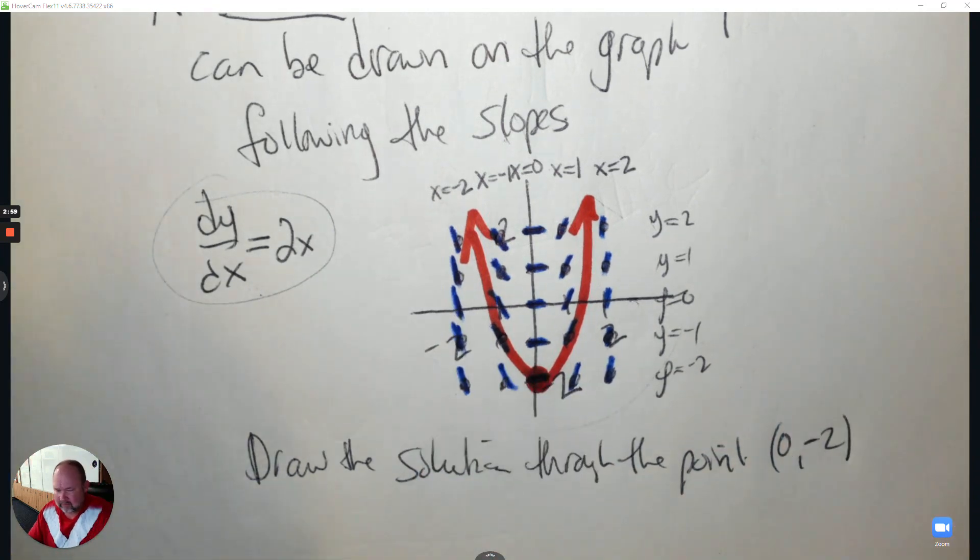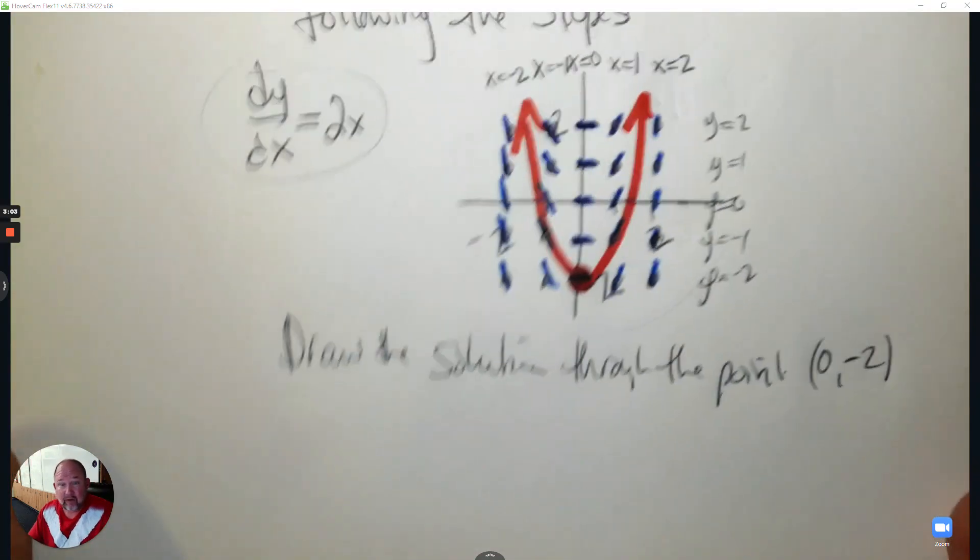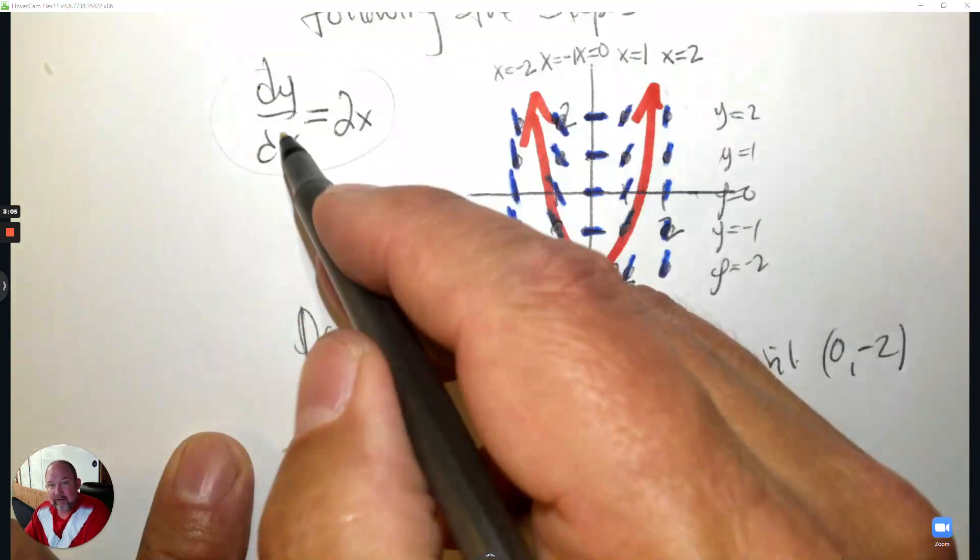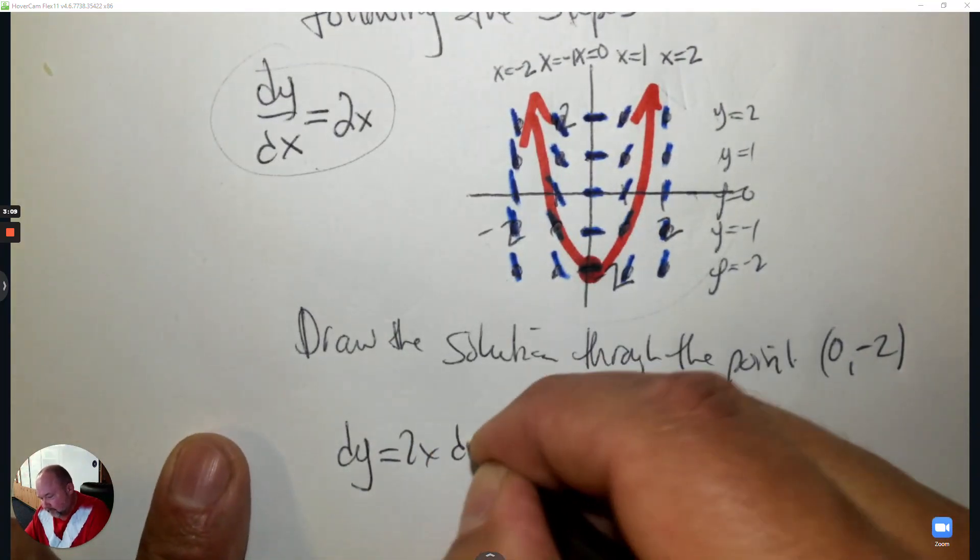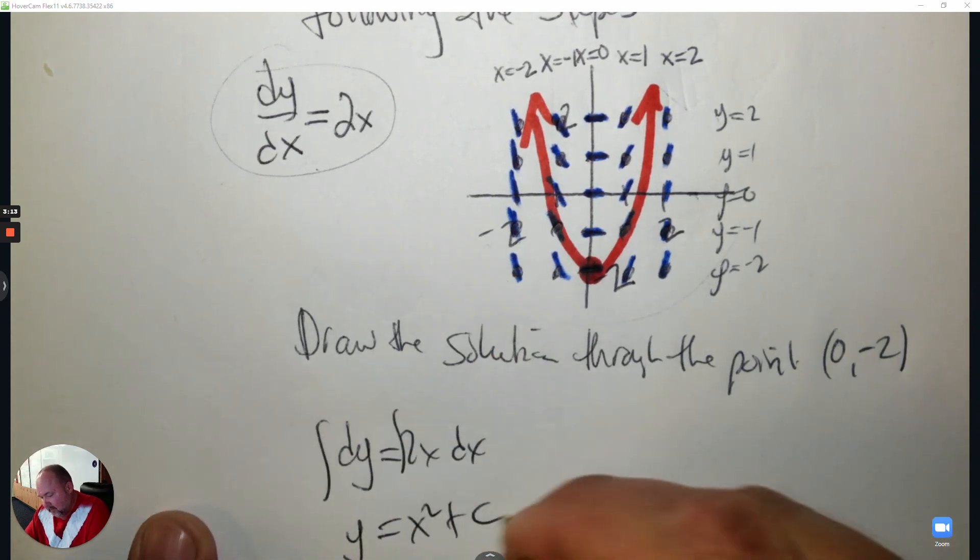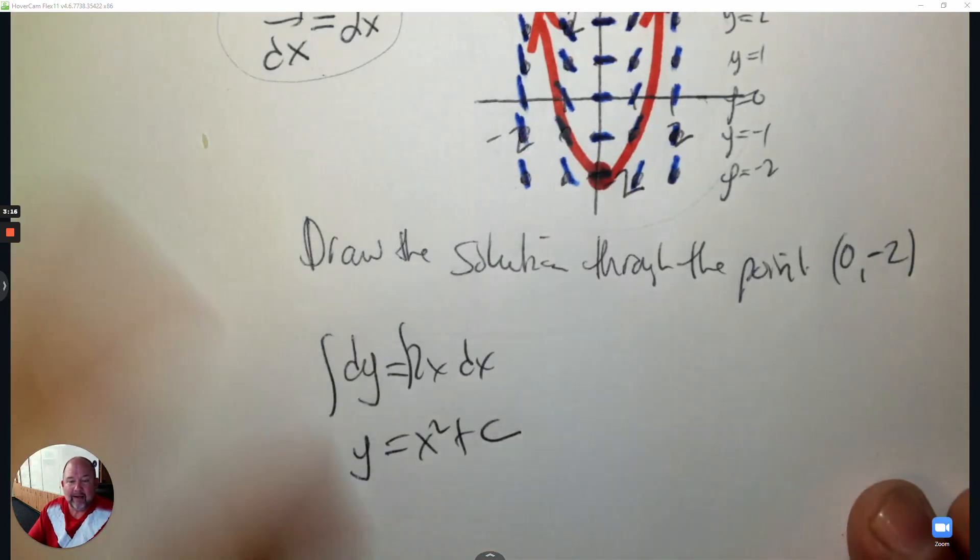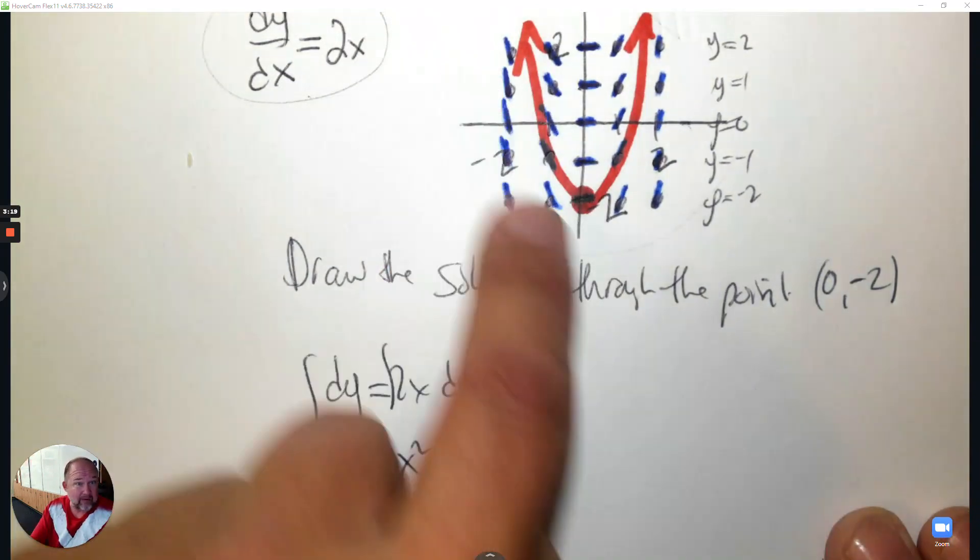What does that remind you of? Well, we can also solve it. That's solving it by graphing, by solving the differential equation. If I take this and separate the variables, then integrate both sides, I get y equals x squared plus c. Doesn't that look like a parabola?